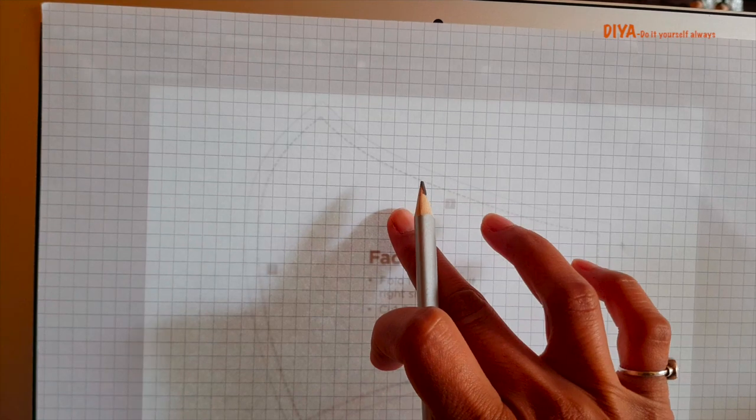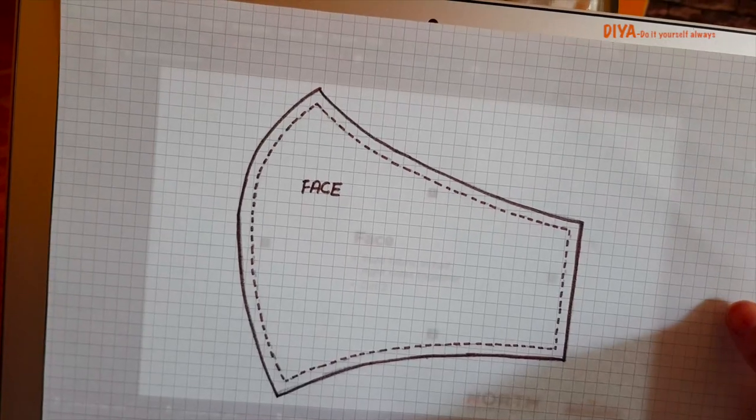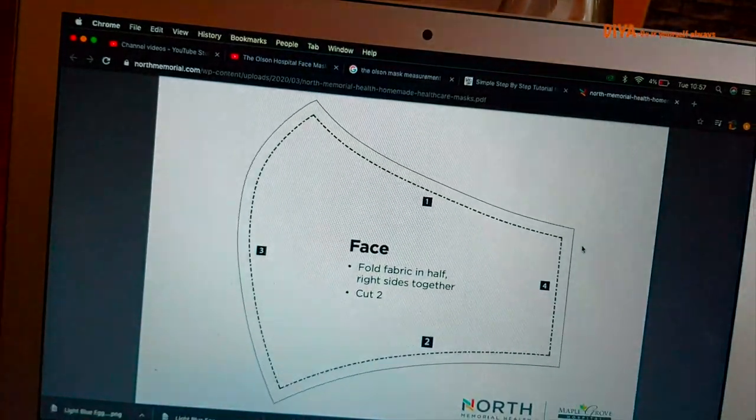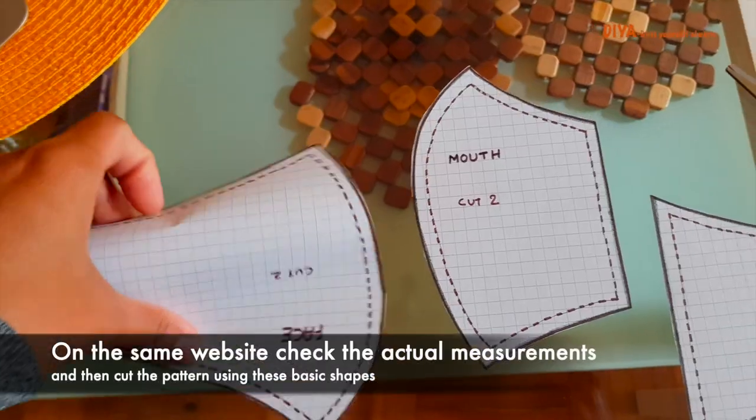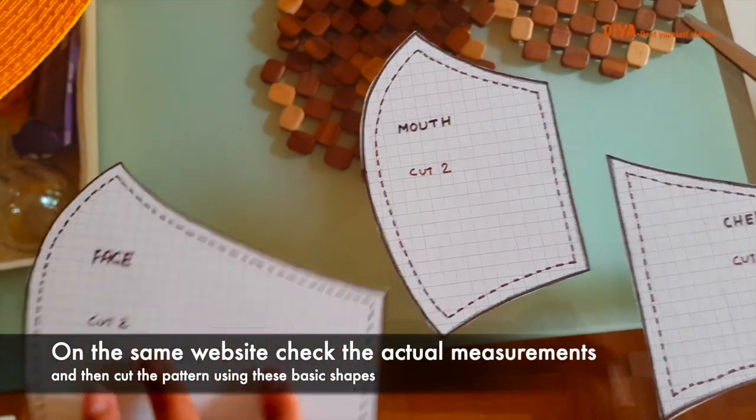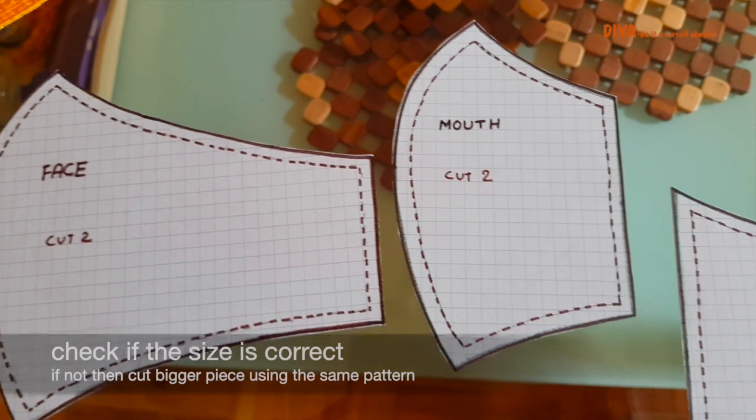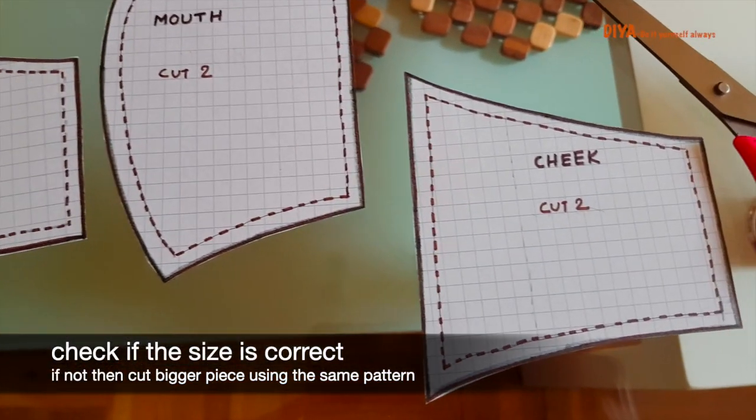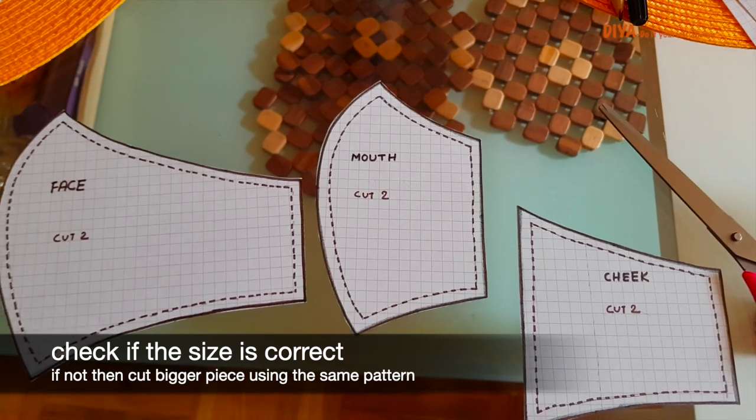If you don't have a printer, I'll show you how you can trace the pattern. Take a paper and place it over the computer screen like this and then trace the basic pattern. In the same website they have shared the measurement, so check if the size is correct. If not, then cut bigger pieces using the same pattern. Make sure you name all the pieces so you will have three cuttings: one is face piece and the other is mouth and cheek pieces.